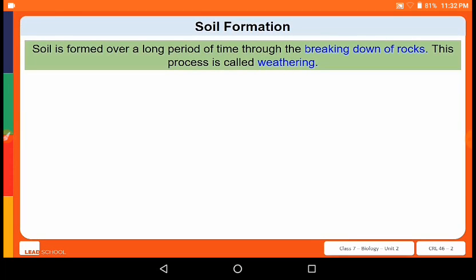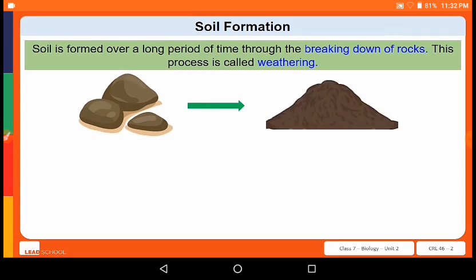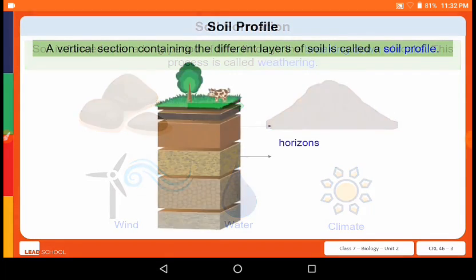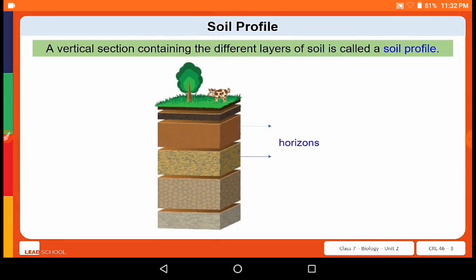In this video, we will learn about the soil profile. Soil is formed over a long period of time through the breaking down of rocks. Rocks are broken down by the action of wind, water, and climate — a process called weathering. Soil is formed in many layers, with each layer deposited over the previous layer.